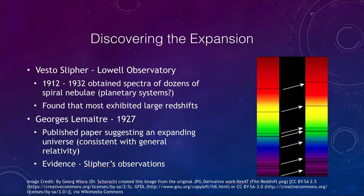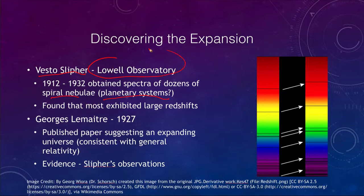This actually goes back into the early 1900s, and one of the people studying this was Vesto Slipher. What he was doing was looking for planetary systems, so he was collecting spectra of the spiral nebulae. He was working at Lowell Observatory, which is the area where Pluto was discovered in 1930.